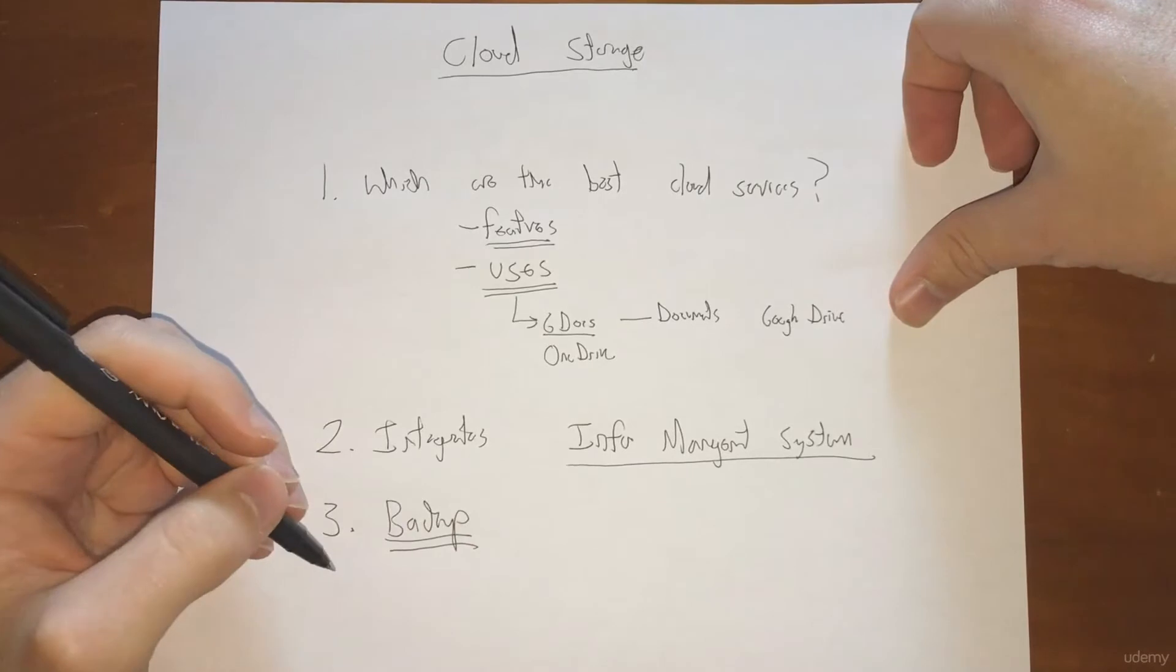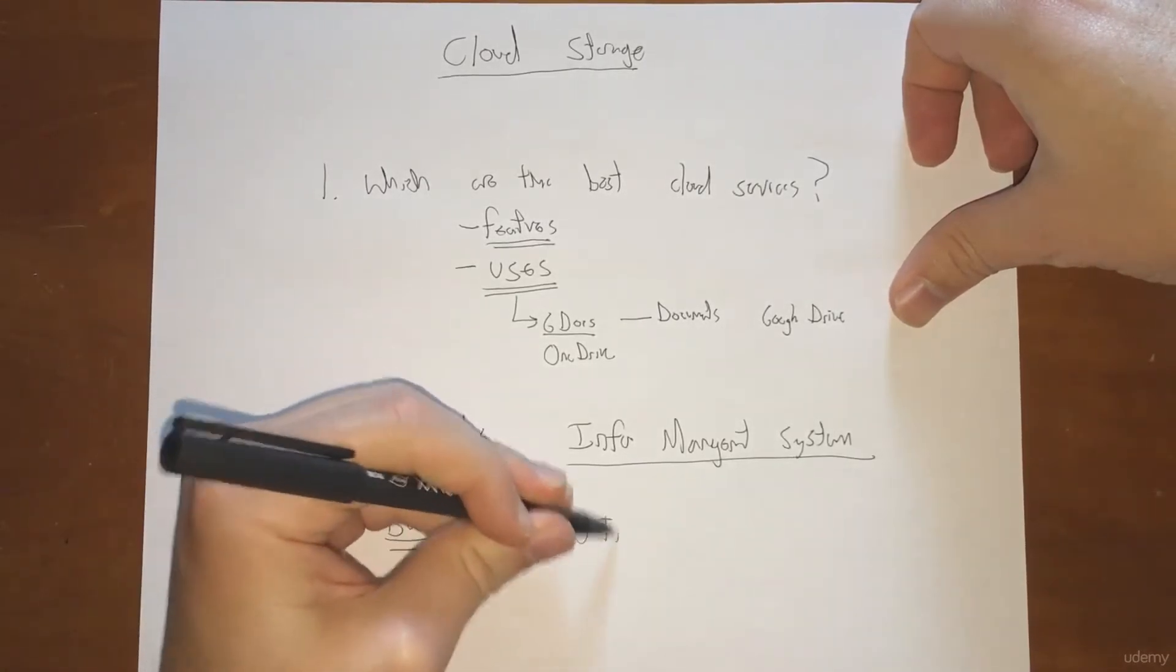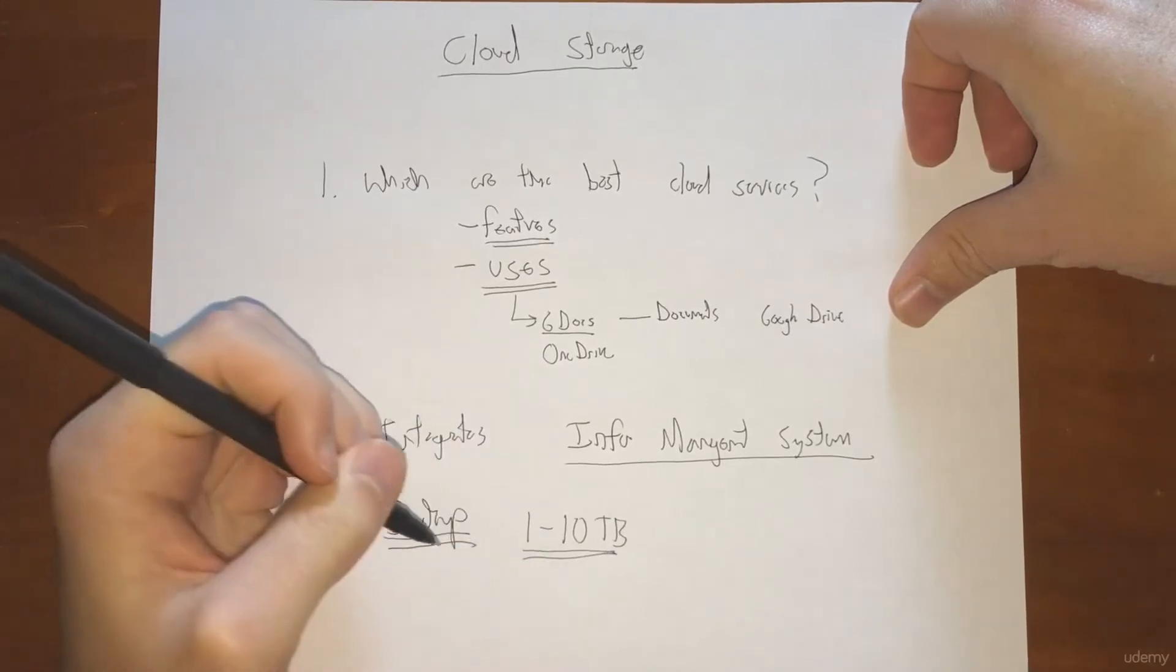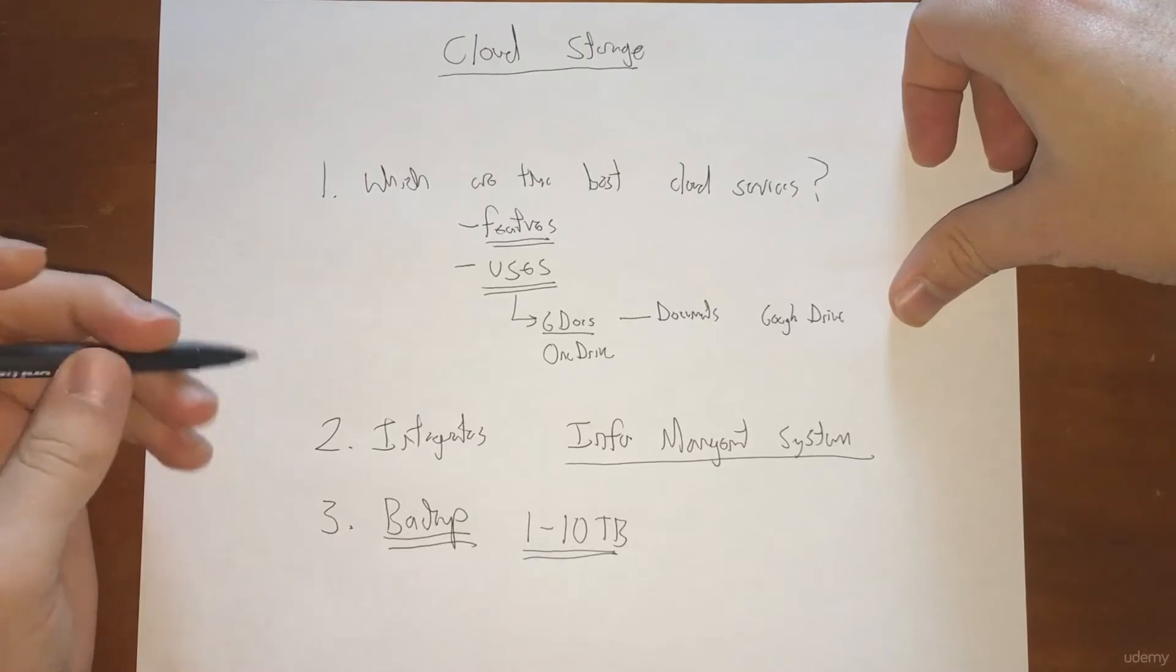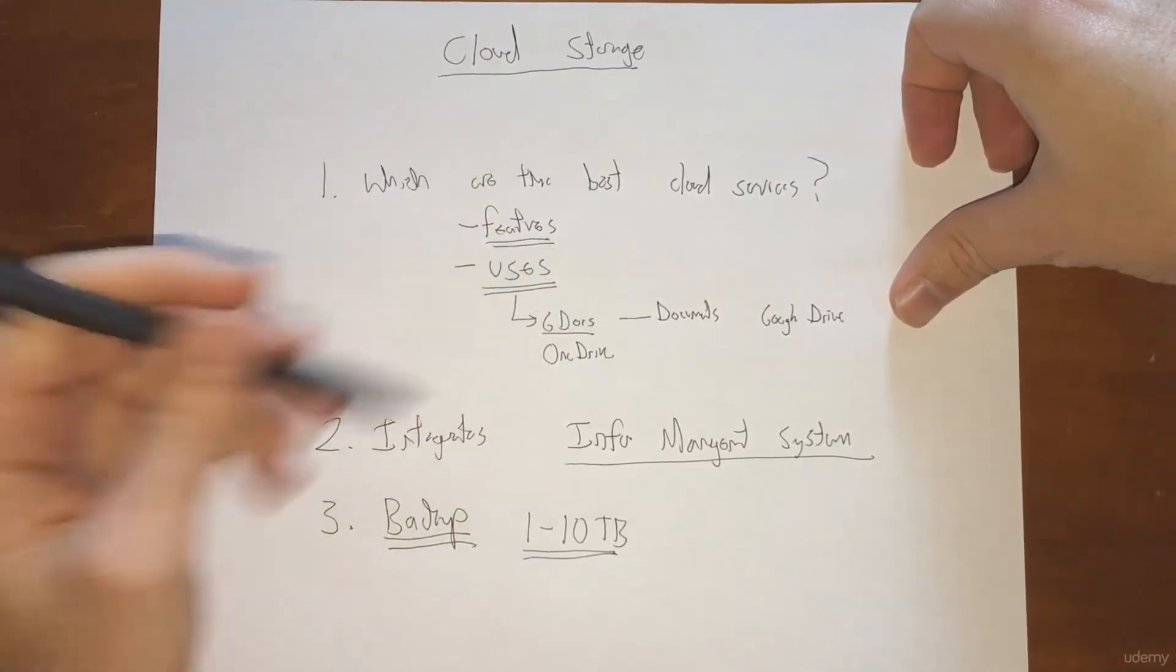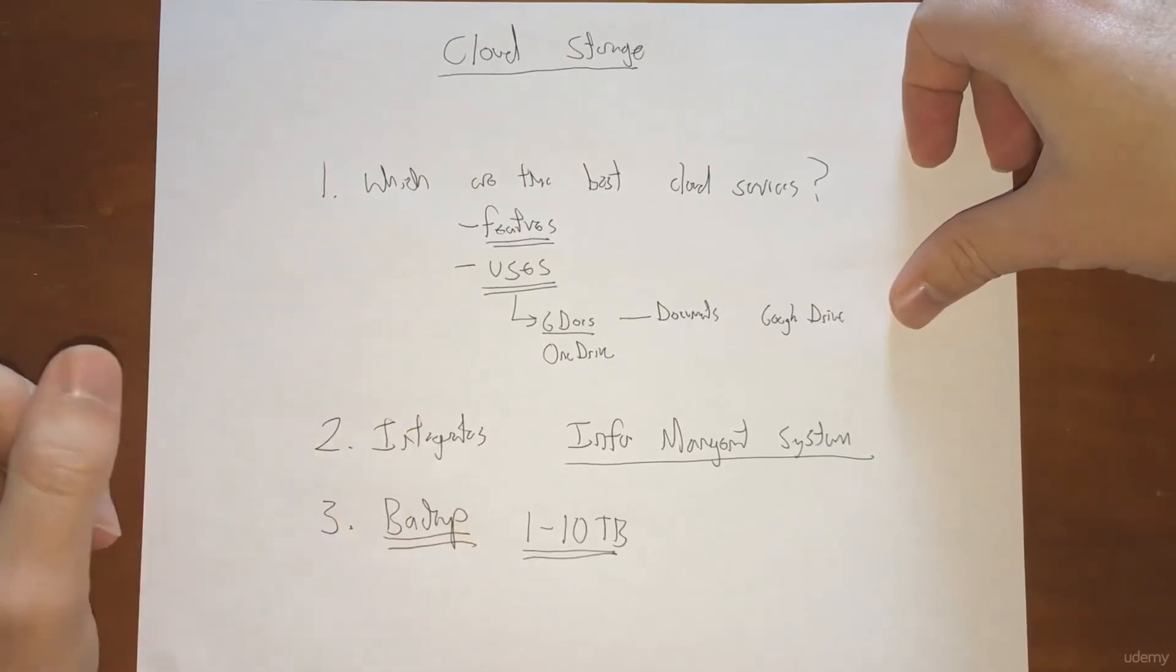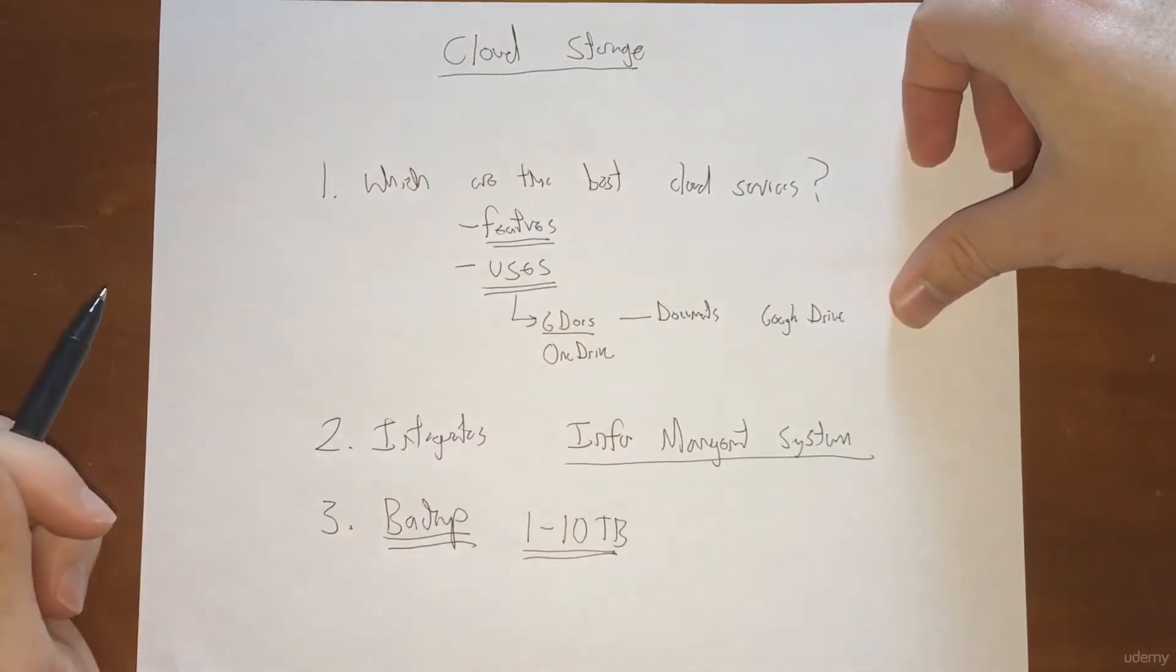If you're backing up anywhere from 1 to 10 terabytes of information or less, then you can use cloud storage to do that very cheaply. What we're going to be talking about in terms of the different options, including some that I doubt many of you have ever heard of. We're not just talking about Dropbox and Google Drive, it goes well beyond that.